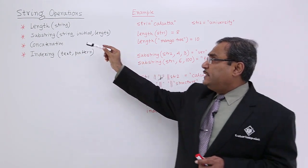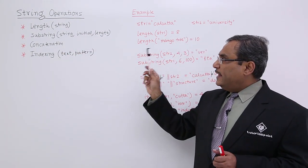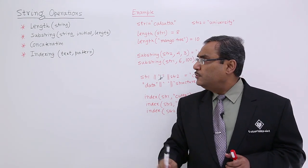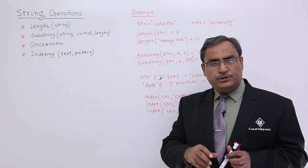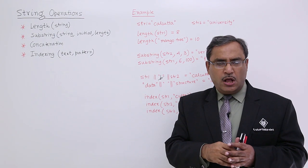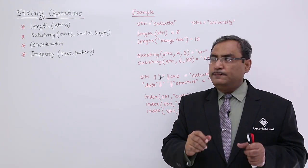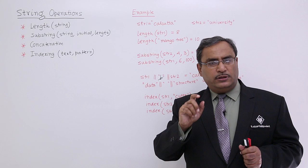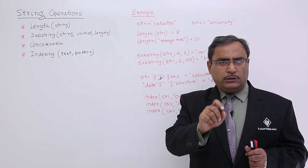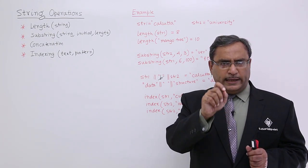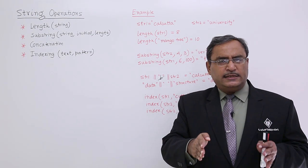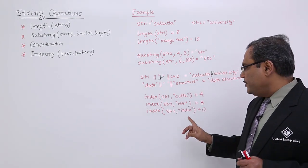These are the basic string operations. One is length, which will calculate the number of characters in the string, including the blank character also. Substring will retrieve a portion of the string. From the very name substring, it is quite obvious. Concatenation means it will add two strings. And indexing means it will search a pattern in a main text or string and find out the position or location number or index number from where the pattern has been found. If the searching is unsuccessful, then it will return value 0.